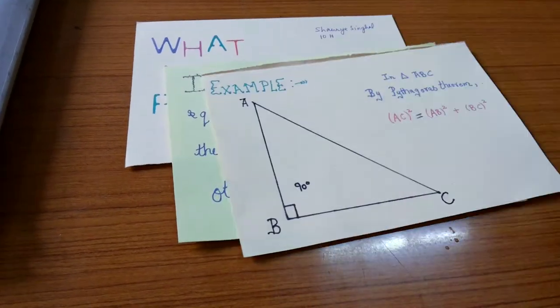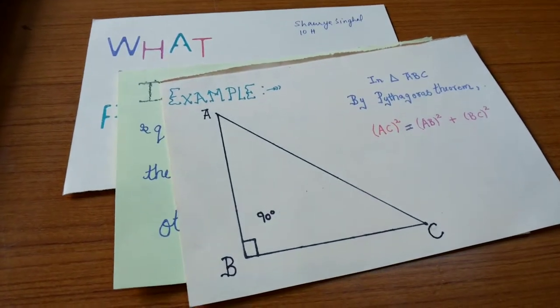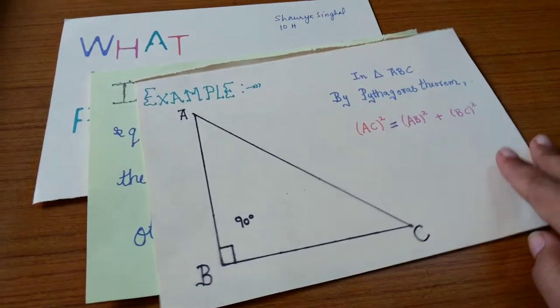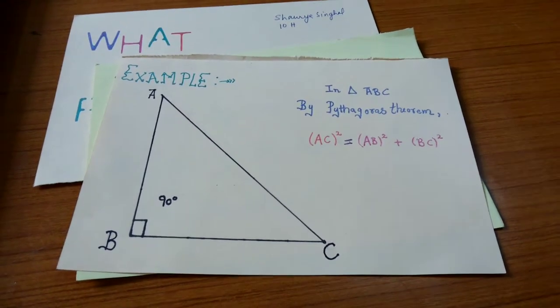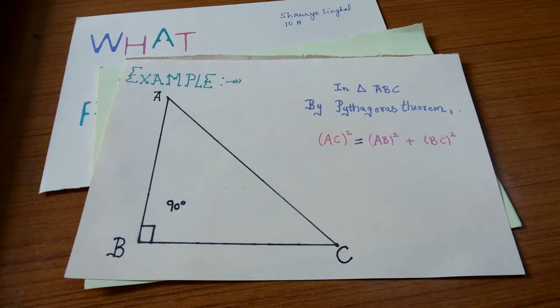If we consider a triangle ABC right angled at B and AC be the hypotenuse, so by Pythagoras theorem, AC square is equal to AB square plus BC square.